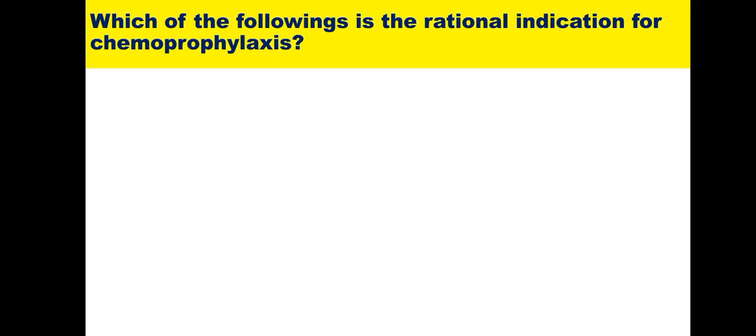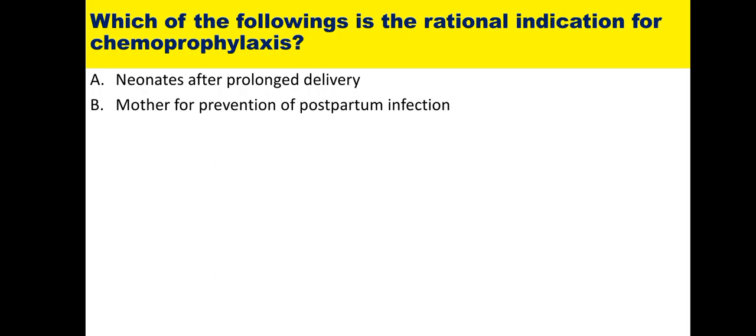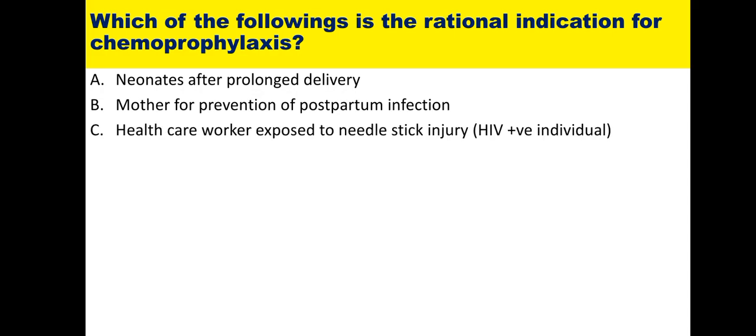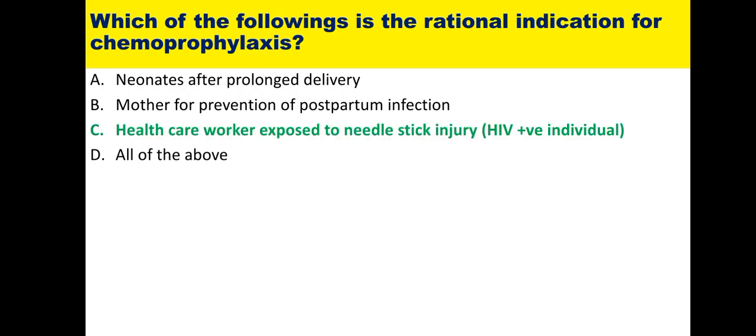Eighteenth: which is the rational indication for chemoprophylaxis? Options are neonates after prolonged delivery, mother for prevention of postpartum infection, healthcare worker exposed to needle stick injury with HIV-positive individual, and all of the above. Chemoprophylaxis must be used in special circumstances to avoid promoting drug resistance. Neonates after prolonged delivery and postpartum infection prevention do not routinely require it. The rational indication is a healthcare worker exposed to needle stick injury with an HIV-positive individual, requiring anti-HIV prophylaxis. The answer is option C.